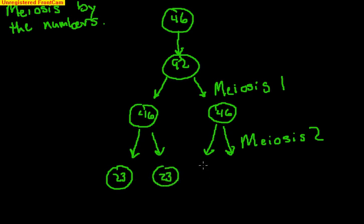23, 23, and 23. Now, you can call these cells down here the gametes, because this is how the gametes are formed in females and males.